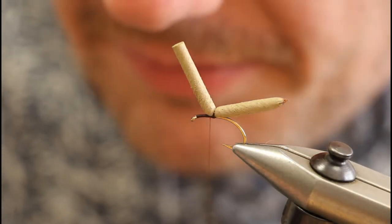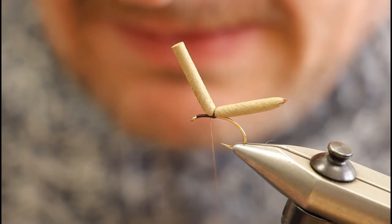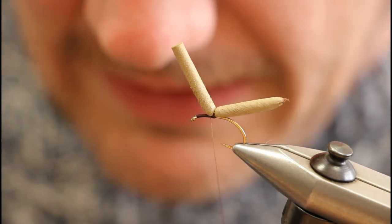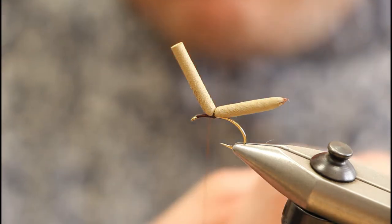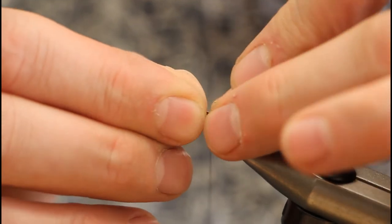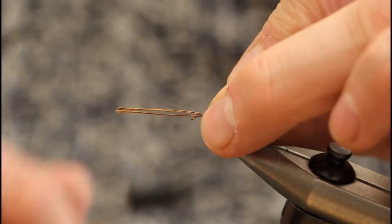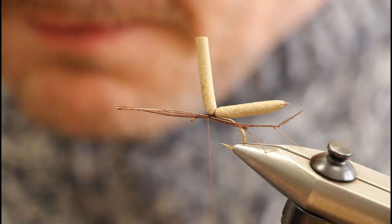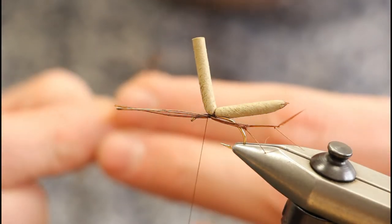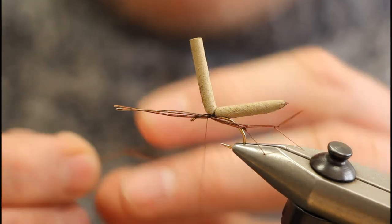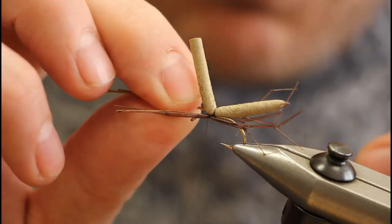Now I've pre-knotted some legs, so just using six legs, three on each side. Let's tie three on the far side first, and then just another three on this side, my closest side.